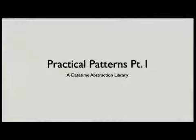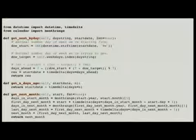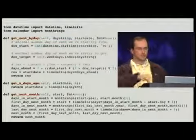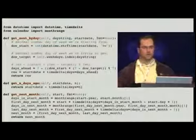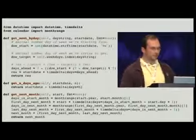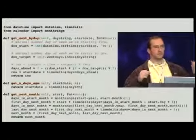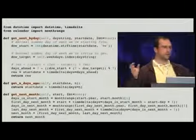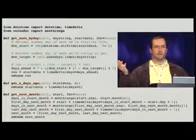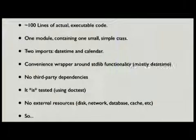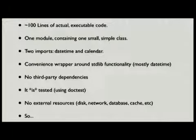We're going to have another look at a datetime extraction library. This is a package called time_machine — it's not on PyPI but it's on GitHub at BK Jones. It only imports two modules from the standard library. It's a wrapper around that, and it just does a bunch of datetime manipulation stuff. It's about a hundred lines of executable code, one module, containing one small simple class called TimeMachine. You do just 'from time_machine import TimeMachine' and you're off and running. You instantiate it with no arguments. It only has two imports, wrapping the functionality of datetime and a little bit of calendar. There are no third-party dependencies or external anything.